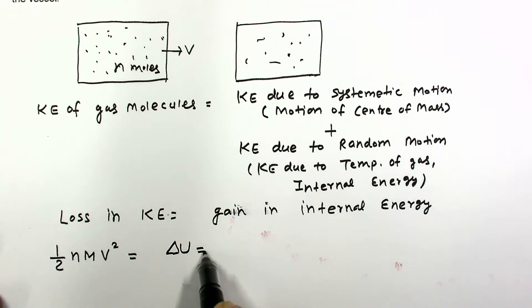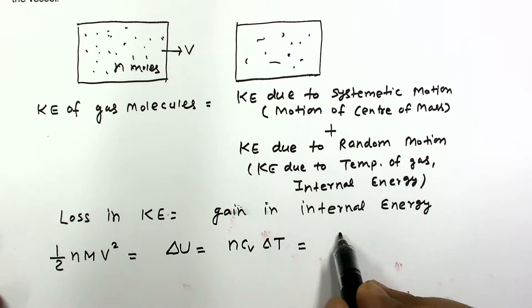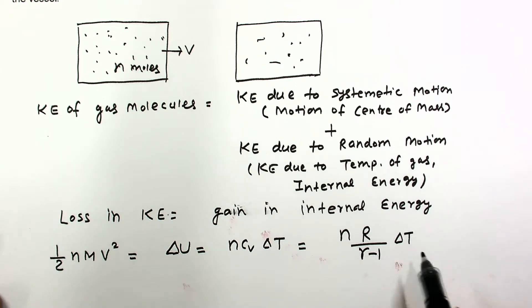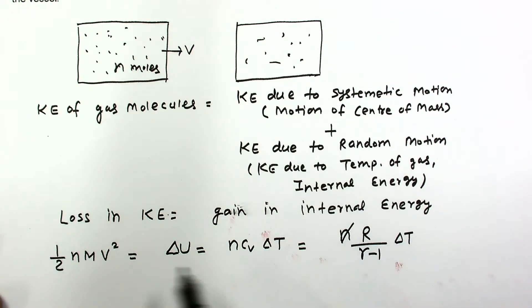And formula of delta U is N Cv delta T, where delta T is change in temperature. And Cv we can write as R upon gamma minus 1. This N and this N get cancelled and the change in temperature delta T is half M V square gamma minus 1 divided by R. So this is the final answer to this problem.